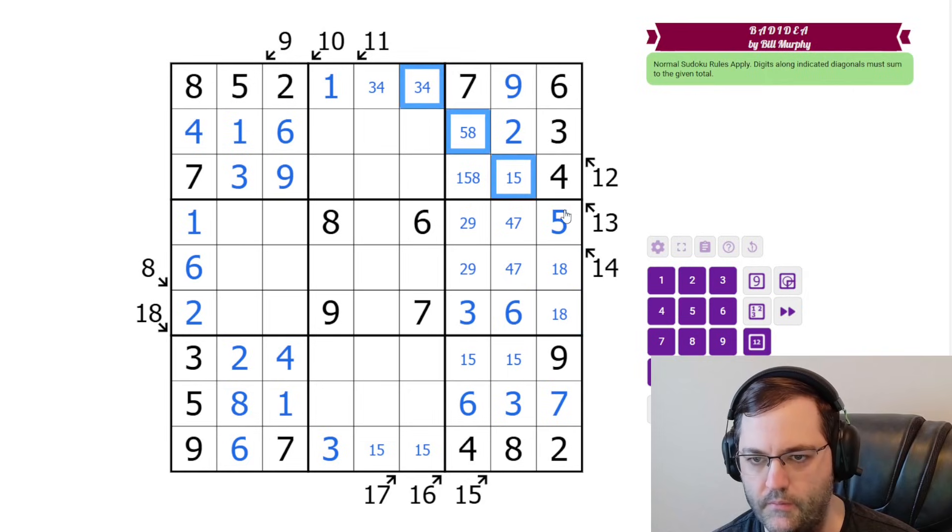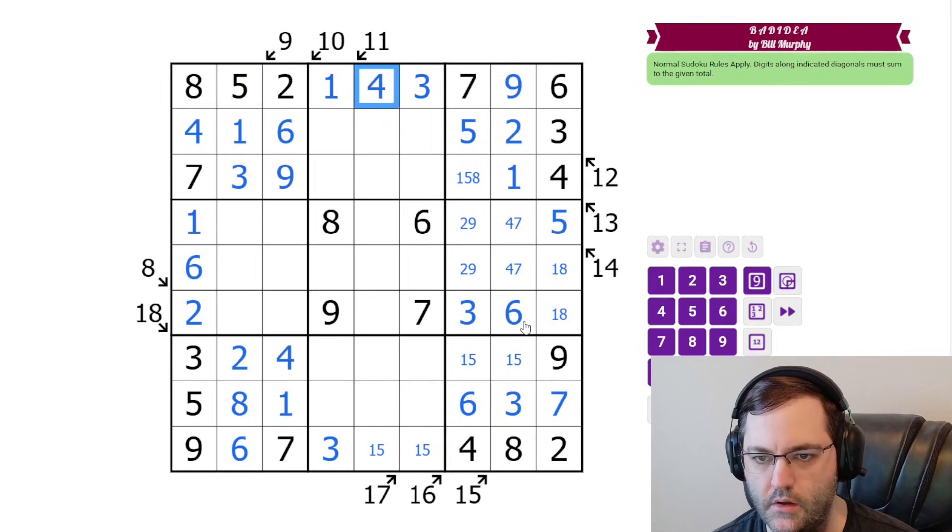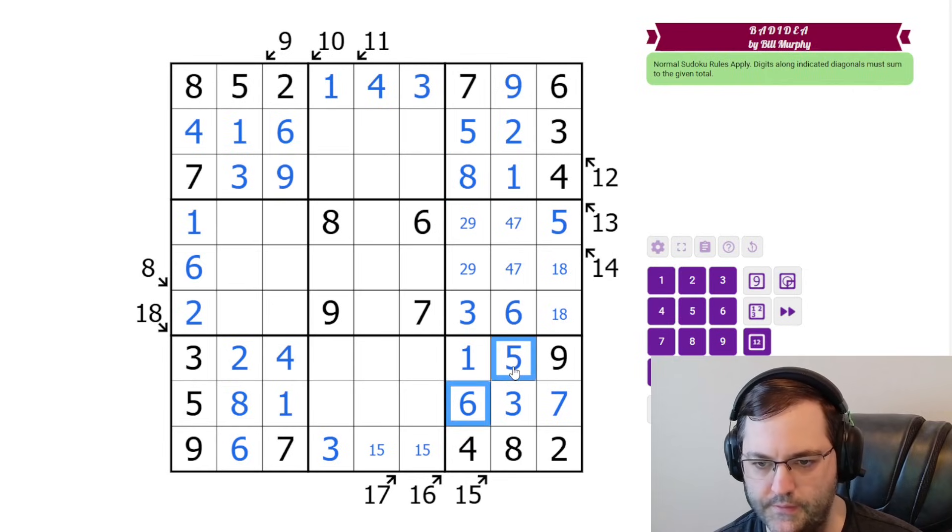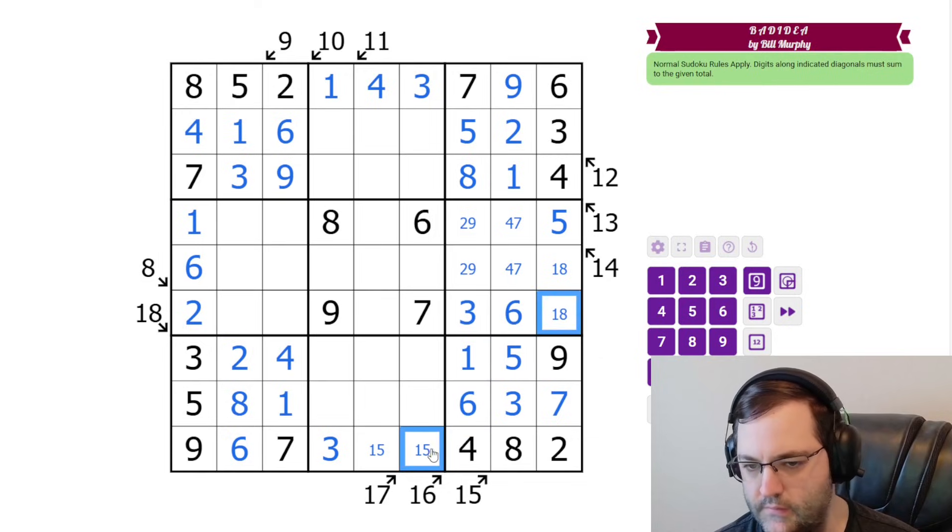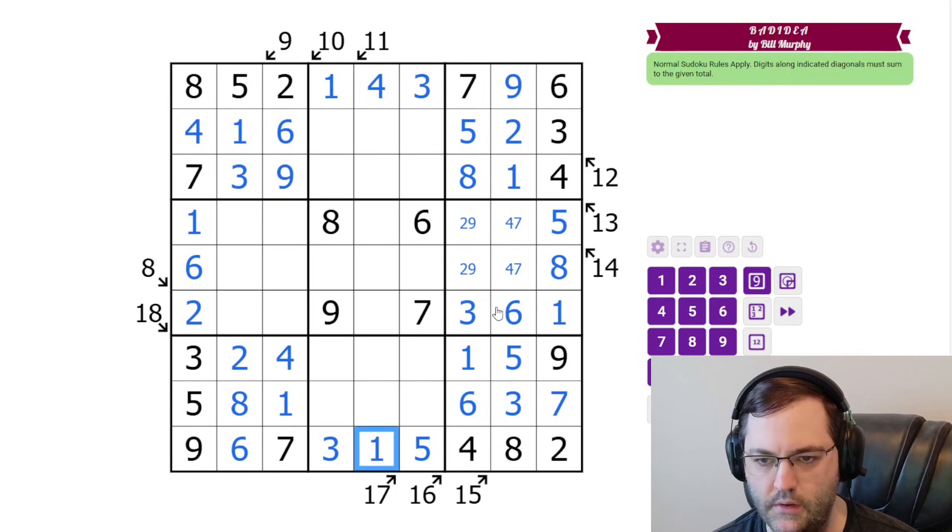Let's look at the 14 now. This is definitely not 8. That's going to be too big with the 5 there. That's going to make that a 1. And now we have 11, so we need 3. That 5 is going to resolve that and that. And now the 17, we have 5 and 6, so we need 6 more in these cells. The only way to do that is 5, 1. And that is all of our little killer clues. So now we are just doing regular Sudoku.